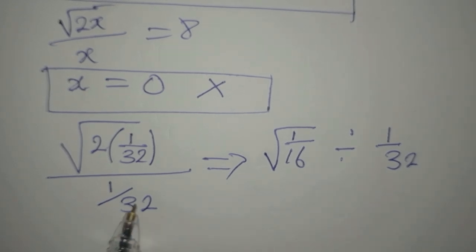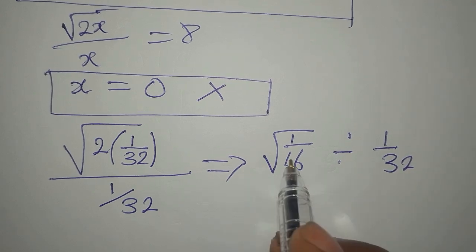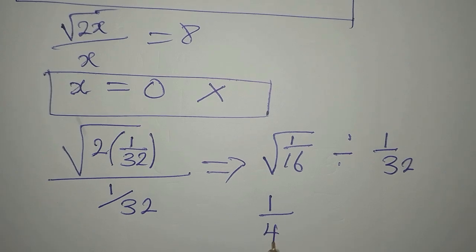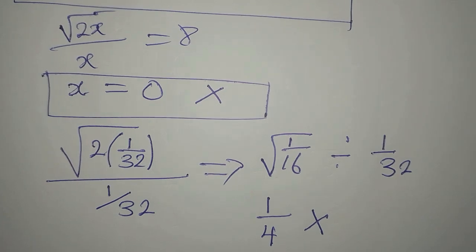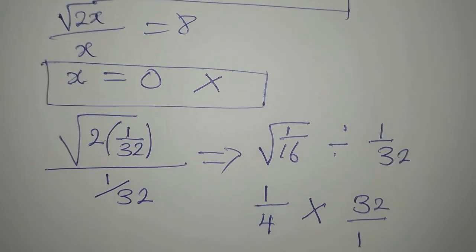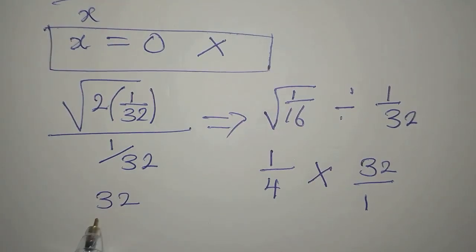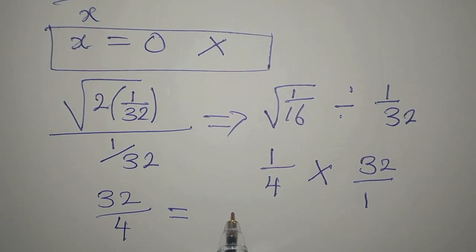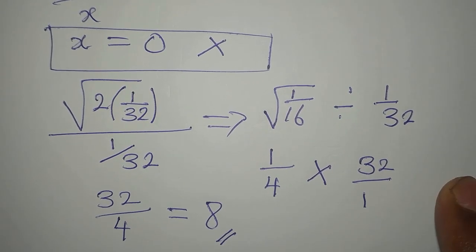So what I have just done is to write this in this form. So square root of 1 is 1, divided by square root of 16 is 4. We normally turn this to multiplication, and then we will turn this around. So we get 32 over 1. So from here now, we are going to get 1 times 32 is 32, then 4 times 1 is 4, and this is giving us 32 divided by 4 will give us 8. And that is what we had on the right-hand side of the equation.